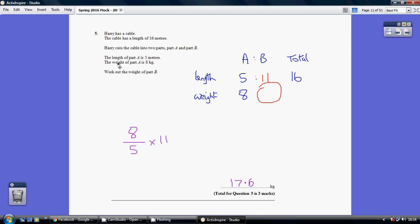Now we're told that the weight of A is 8, so we have another row for weight, and we're looking to work out the weight of part B. This is a straight proportion question.